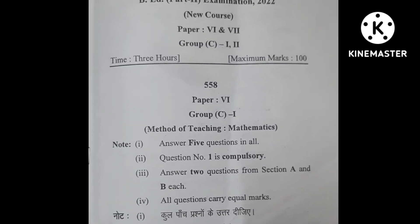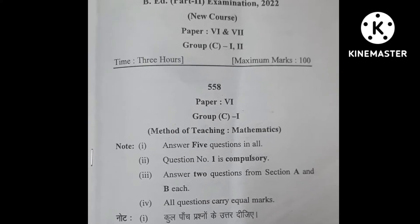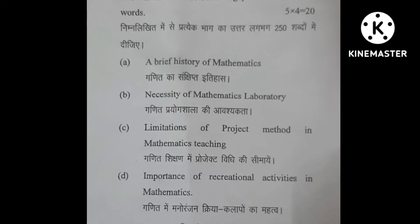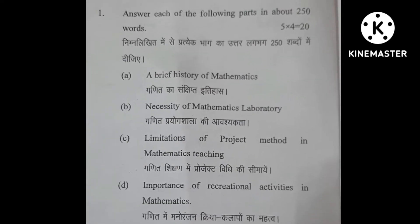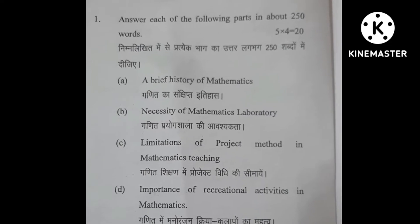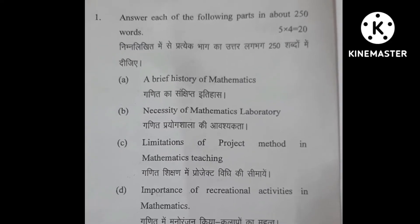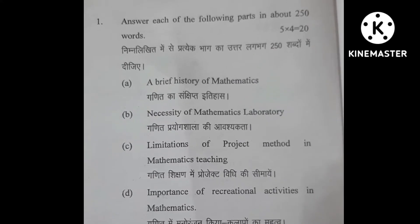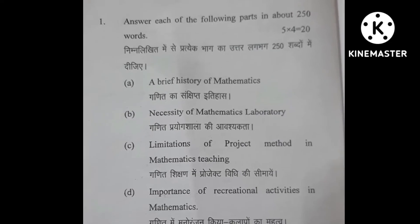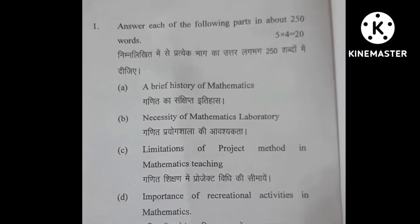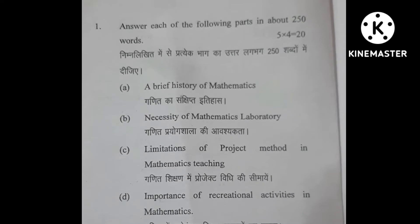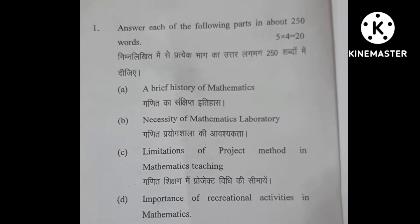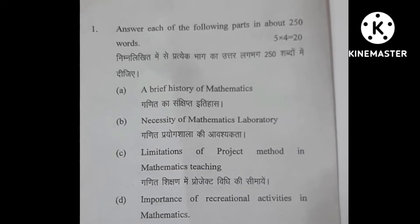The first question is compulsory and the answer has to be of 250 words; it carries 20 marks. The options are: (A) a brief history of mathematics, (B) necessity of mathematics laboratory, (C) limitations of project method in mathematics teaching, and (D) importance of recreational activities in mathematics.